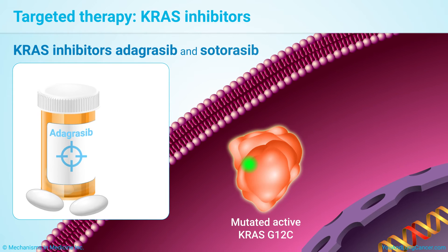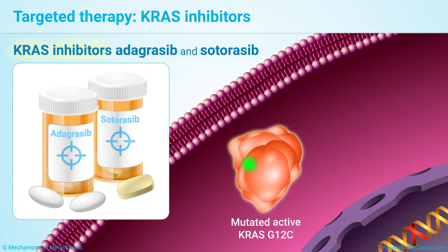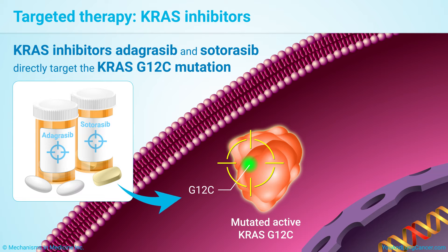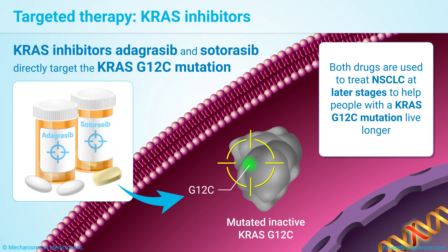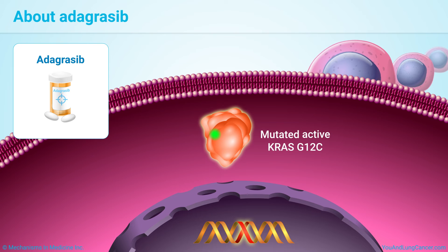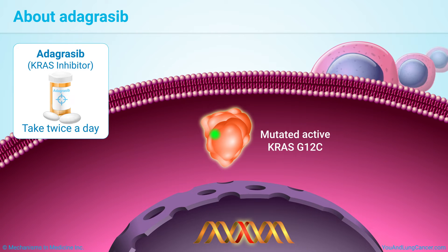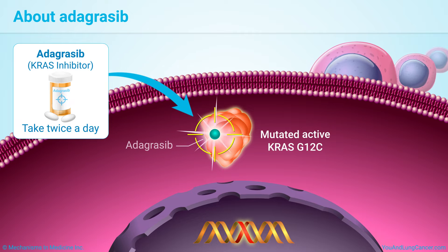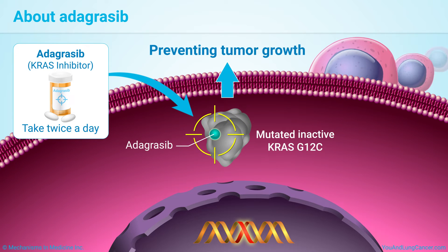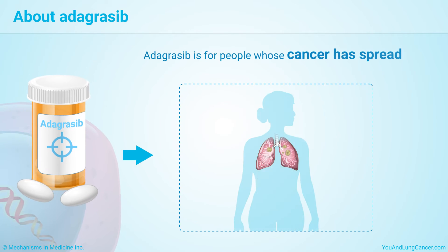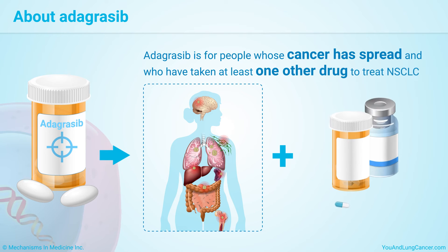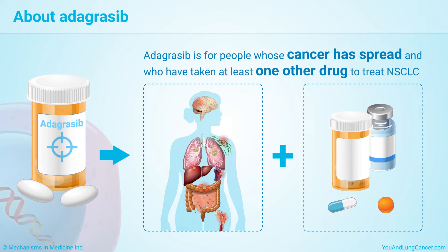The drugs adagrasib and sodoracib are called KRAS inhibitors. They directly target the G12C mutation that many people with KRAS mutations have. Both drugs are used to treat non-small cell lung cancer at later stages to help people with a KRAS G12C mutation live longer. Adagrasib is a KRAS inhibitor that you take as a pill twice a day. It works by preventing tumor cells from growing in people with the KRAS G12C mutation, which can shrink tumors. Adagrasib is for people whose cancer has spread and who have taken at least one other drug to treat non-small cell lung cancer.